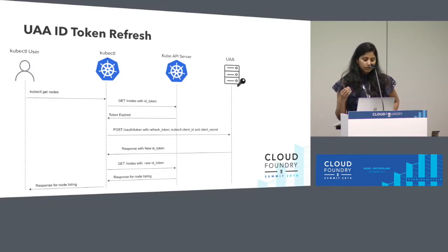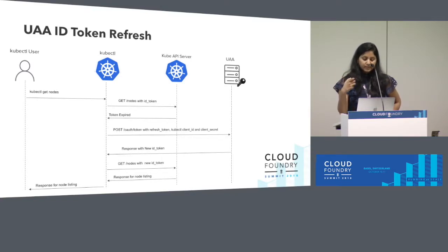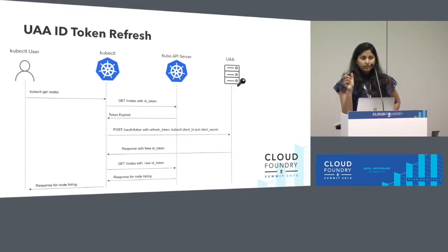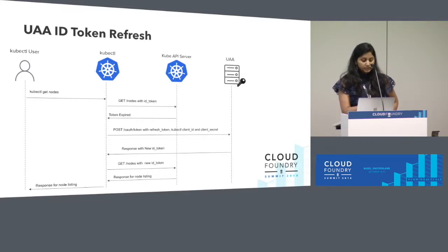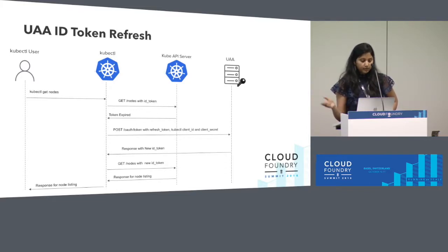If you're a Kubernetes CLI user and you perform an action like getting some nodes, the Kubernetes CLI asks the Kubernetes API server, which then validates the ID token. If the ID token has expired, the Kubernetes CLI starts a refresh token grant flow with UAA, passing its client ID, client secret, and refresh token. UAA validates those credentials and the refresh token, and provides a new ID token. The Kubernetes CLI then sends that ID token to the API server, which validates it and passes the response back to the CLI.